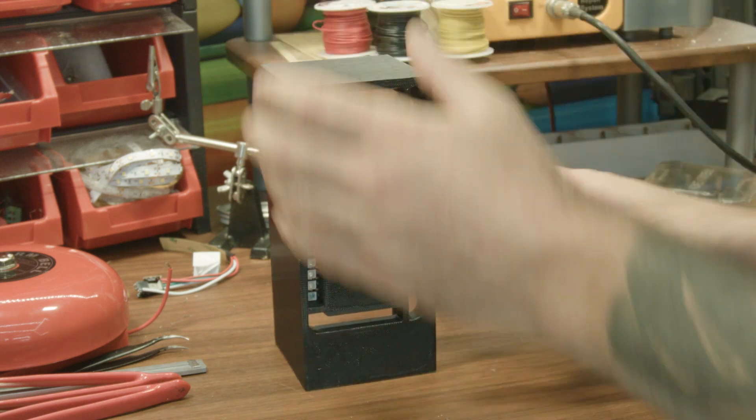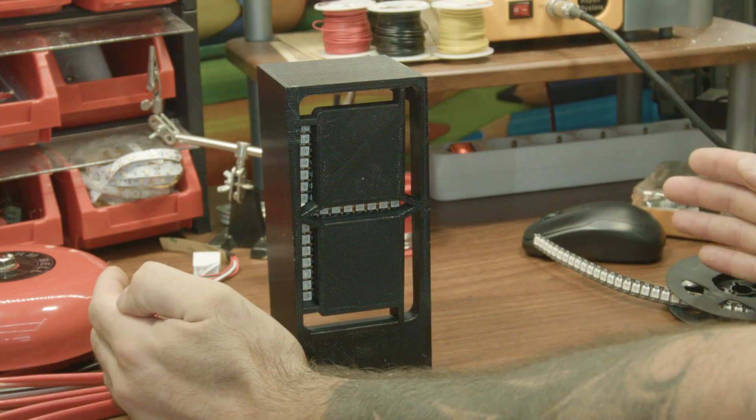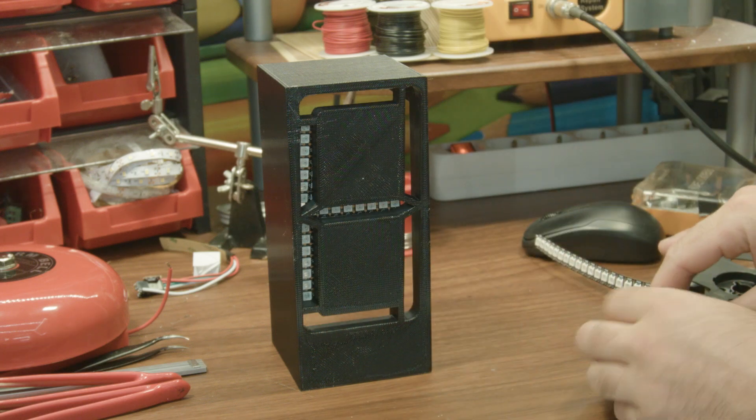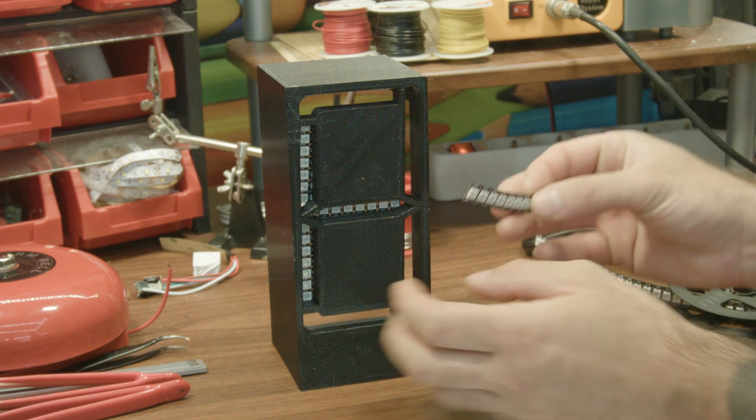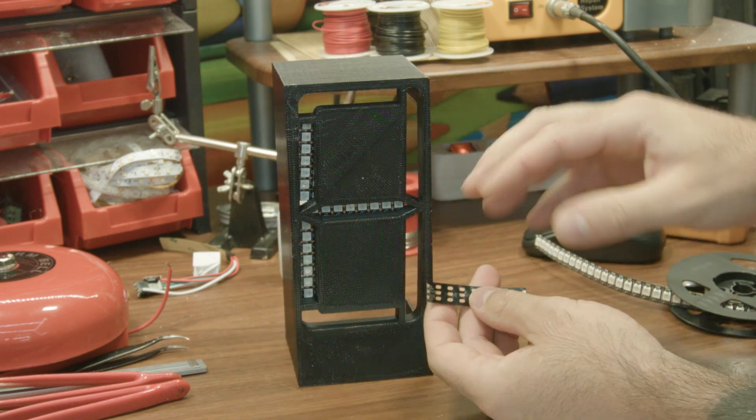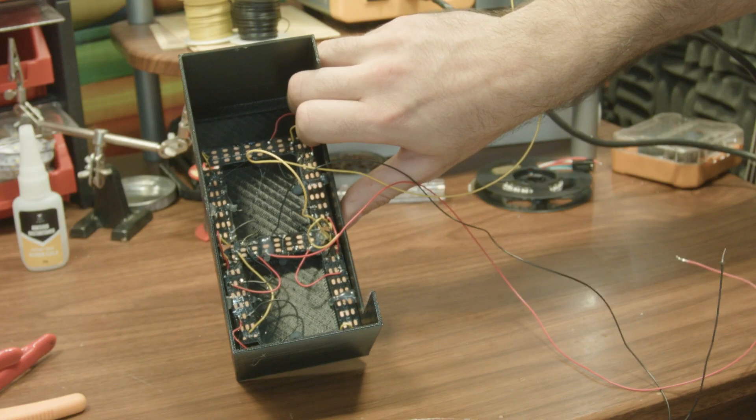And due to printer size restrictions, instead of making the whole clock in one go, I had to make one display at a time, which is fine by me. Now, these LED sections need to be glued in place to then have all the cables soldered together. Which is now done.